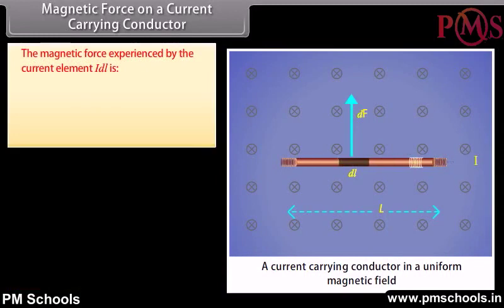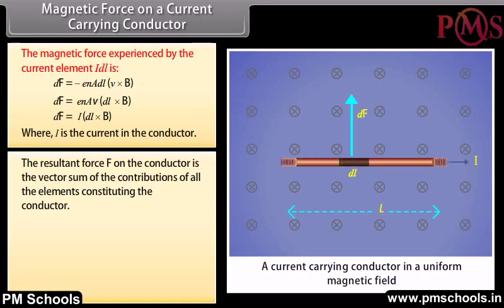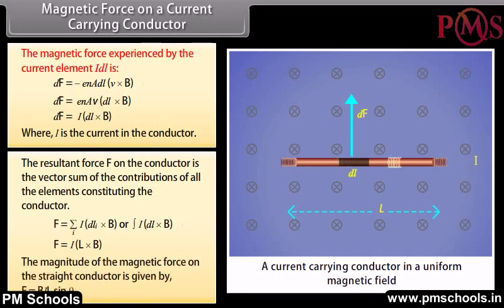The magnetic force experienced by the current element dL is given by −nAdL(V × B), which equals I(dL × B), where I is the current. The resultant force F on the conductor is the vector sum of all elements. The result is F = I(L × B), and the magnitude of magnetic force on a straight conductor is F = BIL sinθ.